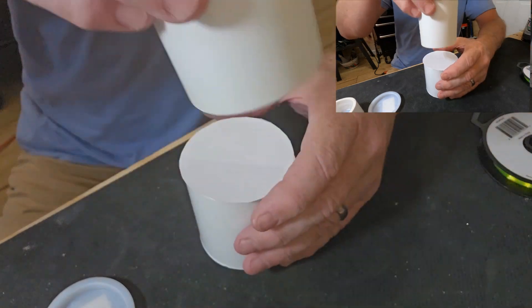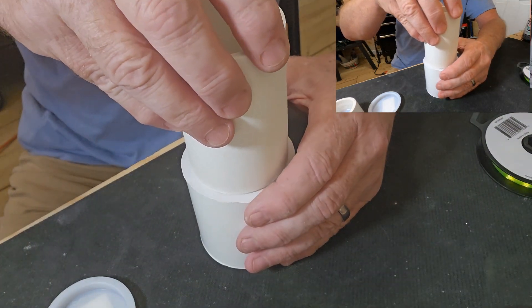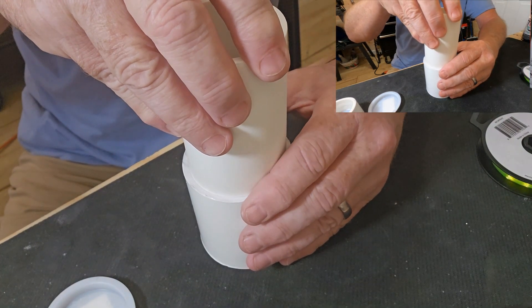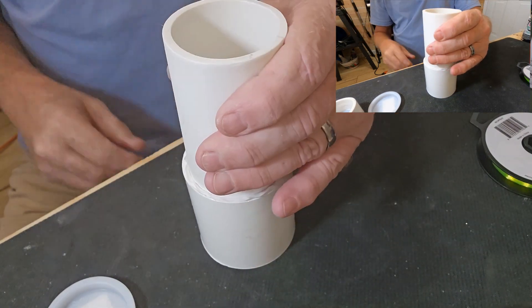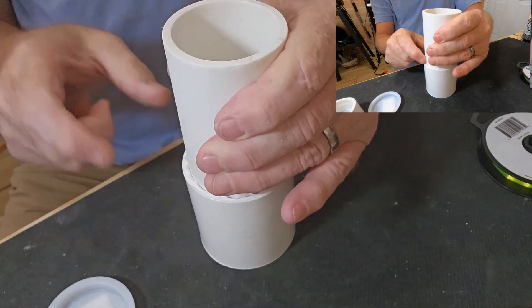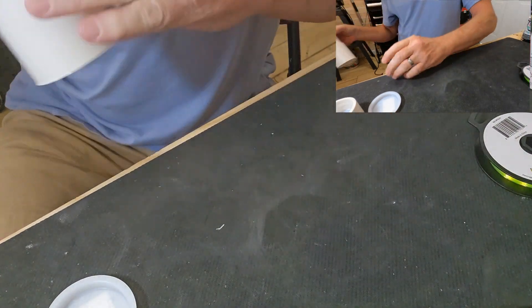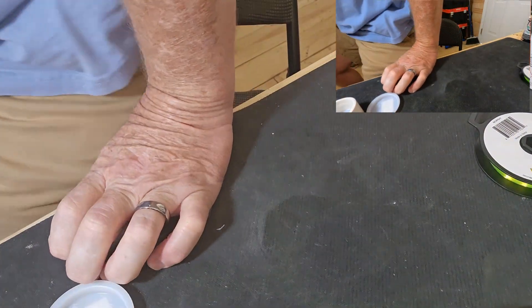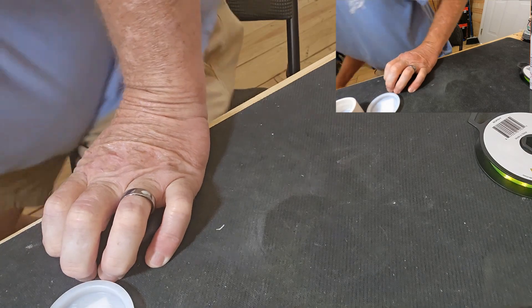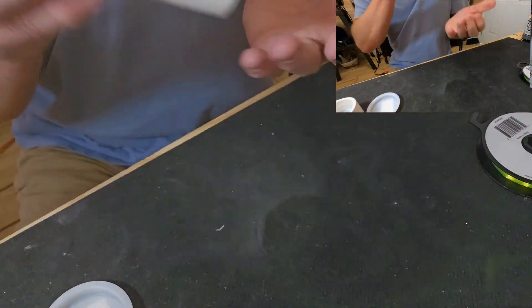We're going to take our coupling, put the three and a half inch piece of PVC up on it, right on top of your paper. Smash it down in there. You'll have to sit it down on the floor to get it down in there all the way.